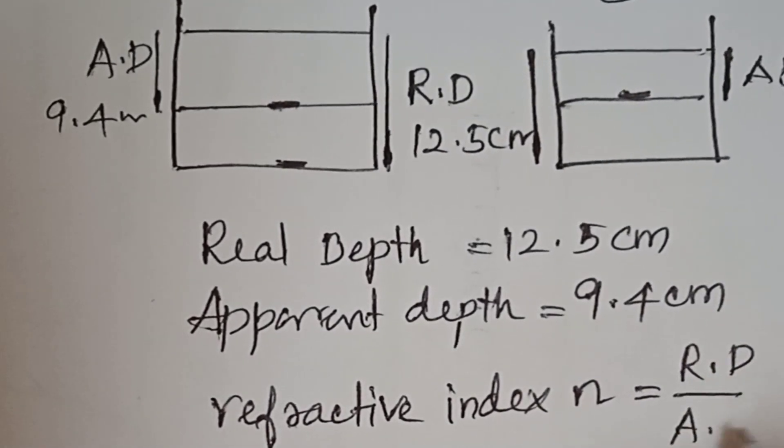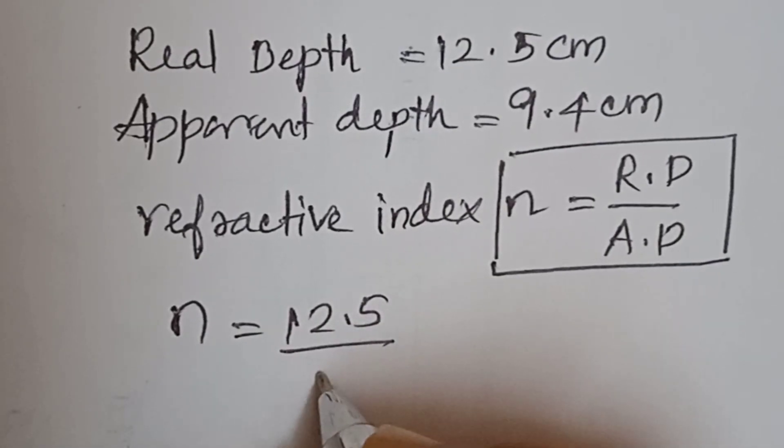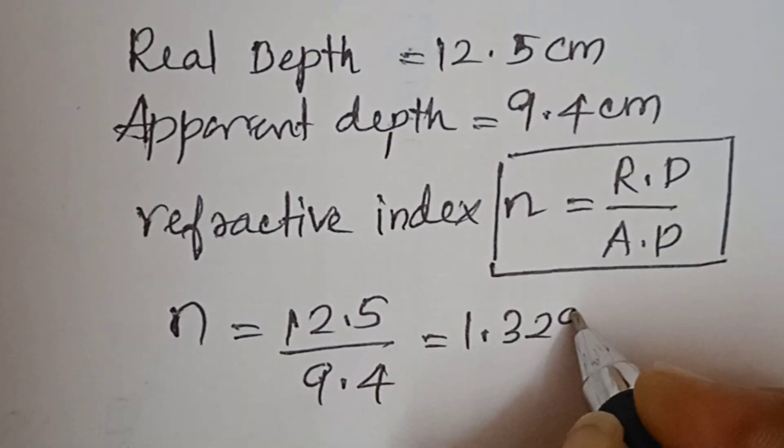Therefore, n equals 12.5 divided by 9.4, which equals 1.3297, approximately 1.33.